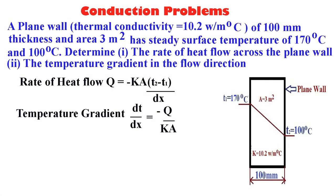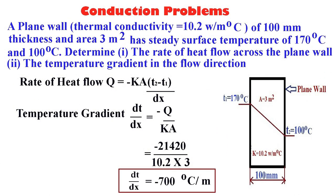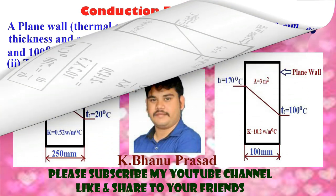For the second part, the temperature gradient in the flow direction is defined as dT/dx = −Q / (kA). With Q = 21,420, k = 10.2, and area = 3, the value of dT/dx is minus 700 degrees centigrade per meter. The temperature gradient is always negative.